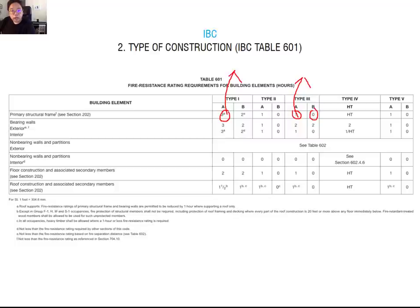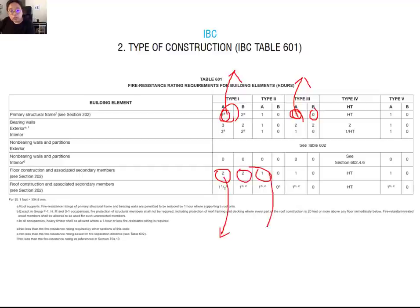These hour-based numbers show how long the material protects against fire spread and keeps the building standing. A 3-hour rating means the structure can withstand fire for three hours; a 1-hour rating means it can stand for one hour. We will talk more about fire rating materials and minimum requirements next year, as this is more advanced material. For now, understand the basic concept — these numbers represent time-based fire protection durations.